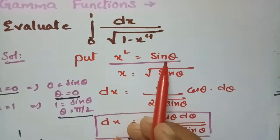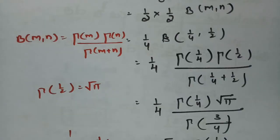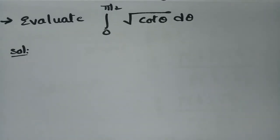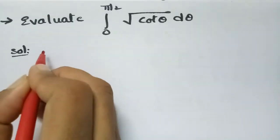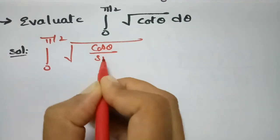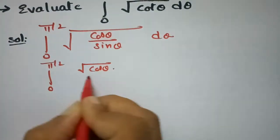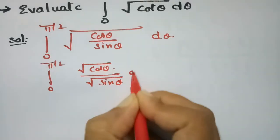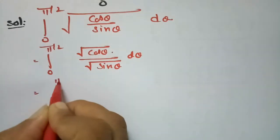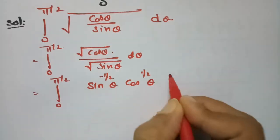Now there is another important problem. We evaluate ∫₀^(π/2) √(cot θ) dθ. This can be written as ∫₀^(π/2) √(cos θ / sin θ) dθ, which becomes ∫₀^(π/2) sin^(−1/2) θ · cos^(1/2) θ dθ.